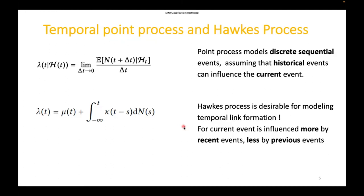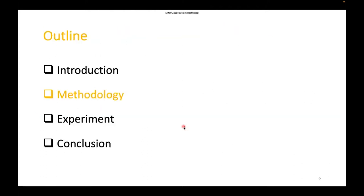Such property is desirable for modeling the link formation sequences. Of course, the current link formation can be influenced with higher intensity by the more recent events, while the events occurring in longer history would contribute less to the current occurrence of target neighbors. Then, let's look at the proposed methodology.